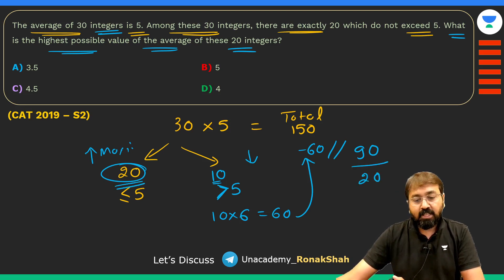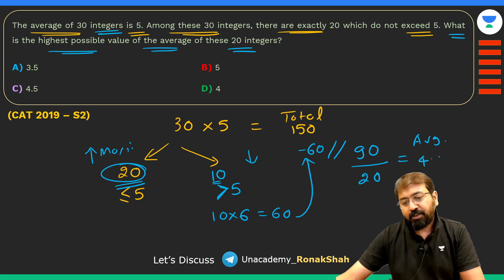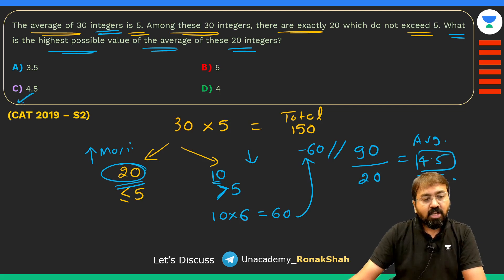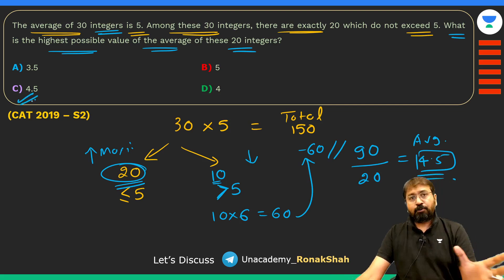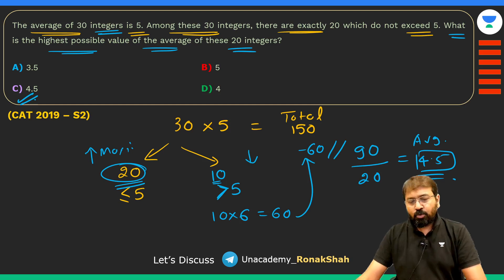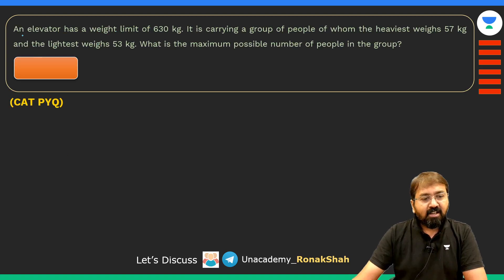Subtracting: 150−60 = 90. The total of the 20 integers is 90, so their maximum possible average = 90÷20 = 4.5. The answer is option C.